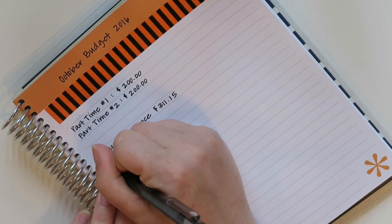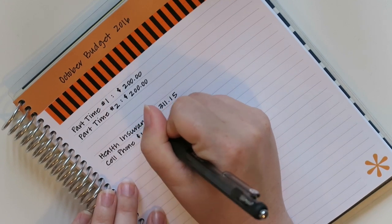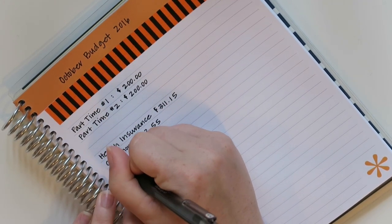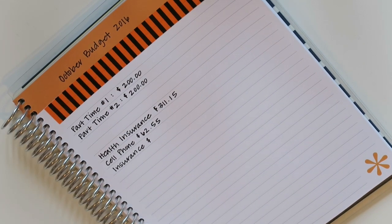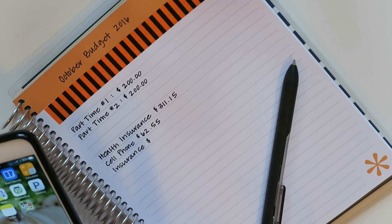Okay. So health insurance is a given. My cell phone is the same each month, $62.55, my insurance. Actually, I need to change over my insurance since I am actually leaving the state.